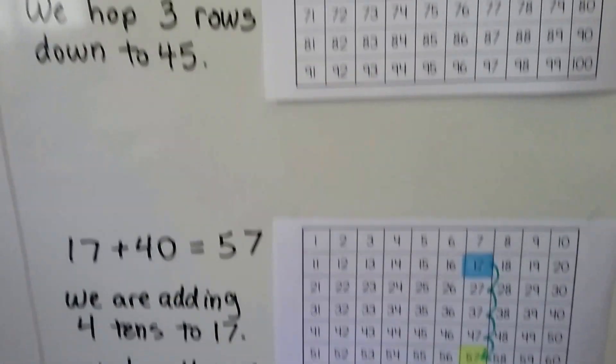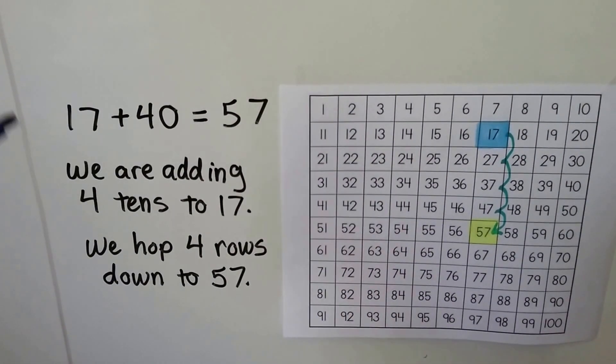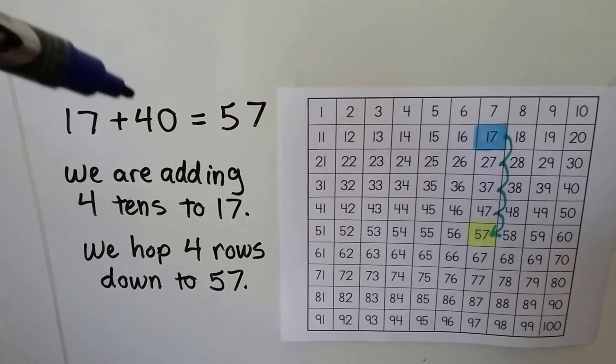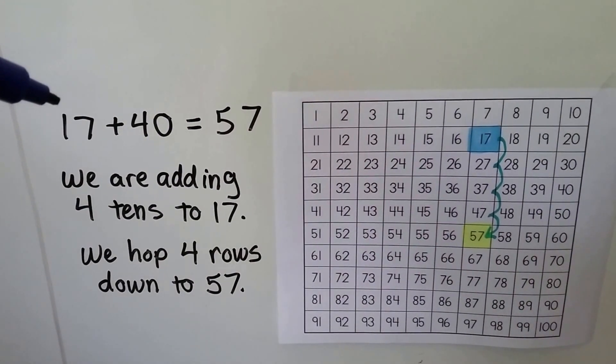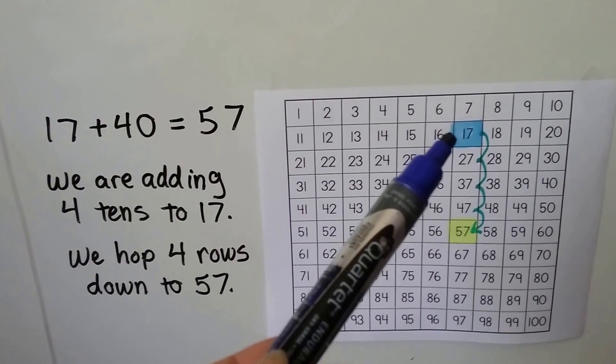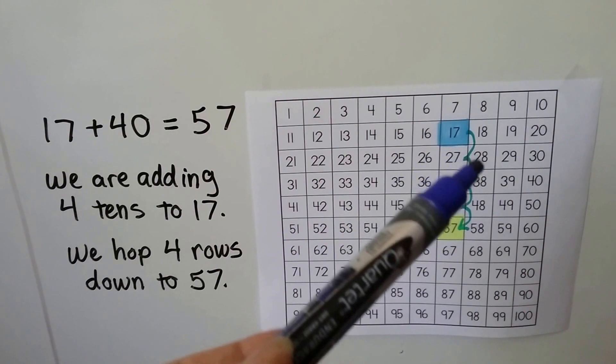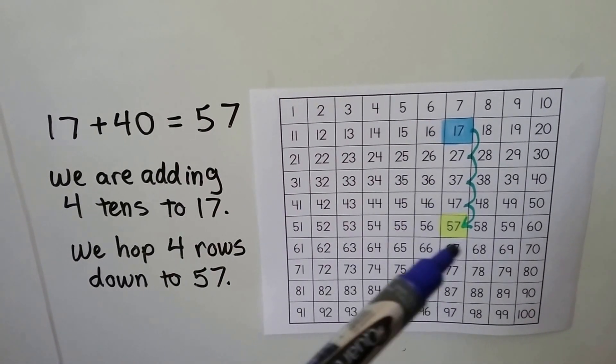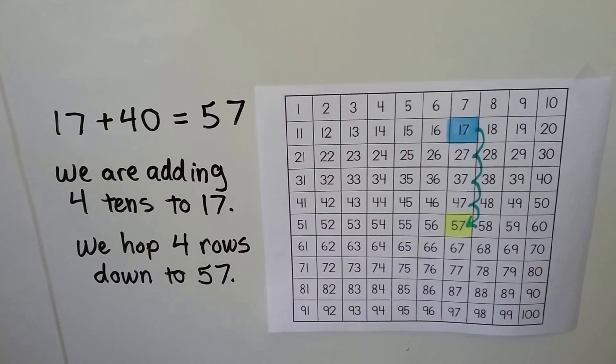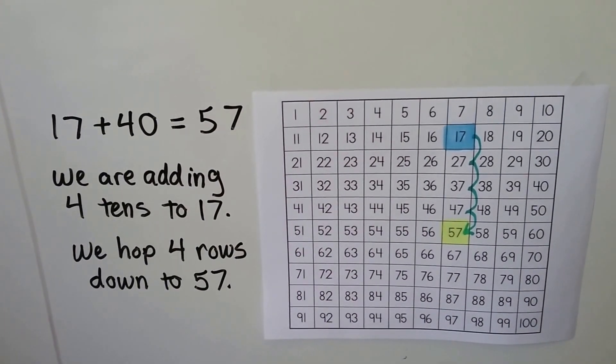Let's try that again. If we do 17 plus 40, we're adding four tens to the 17. We hop four rows down. We start at 17 and we hop four rows of 10 down. 1, 2, 3, 4, and we land at the 57. So 17 plus 40 equals 57.